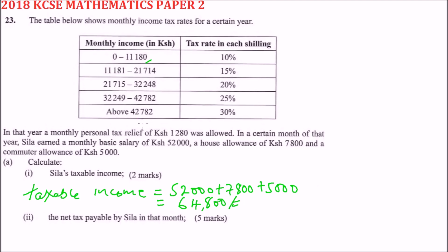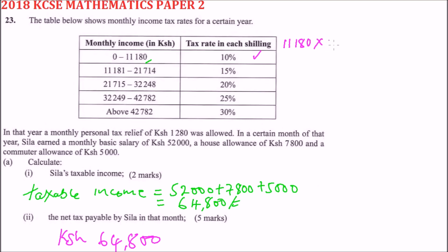Here we need to do a bit of calculation. In part one we found Sira's taxable income is sixty-four thousand eight hundred. The first bracket is ten percent, so ten percent of eleven thousand one hundred and eighty, which is the same as multiplying by 0.1, gives us one thousand one hundred and eighteen. That is the first bracket tax.